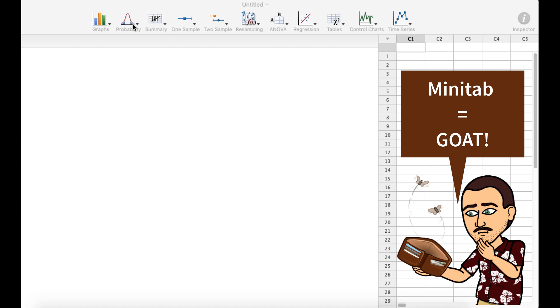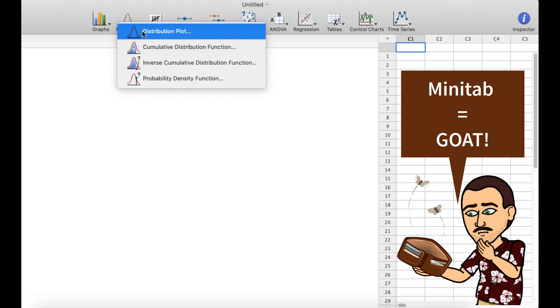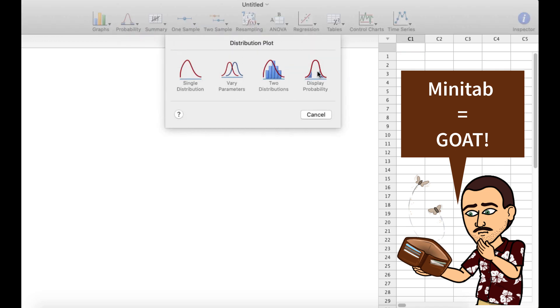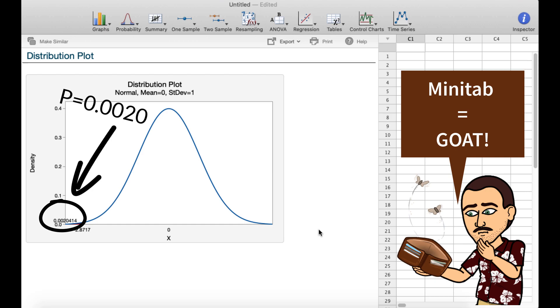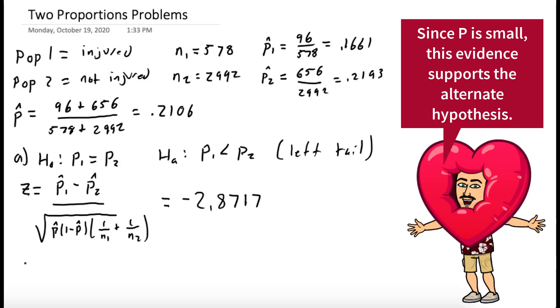We can find the area to the left of that value using Minitab. Go to probability, distribution plot, display probability. We have a normal distribution with a specific X value with the left tail, and X equals our Z statistic, negative 2.8717. We hit OK, and there is our probability. We see that P equals 0.002.